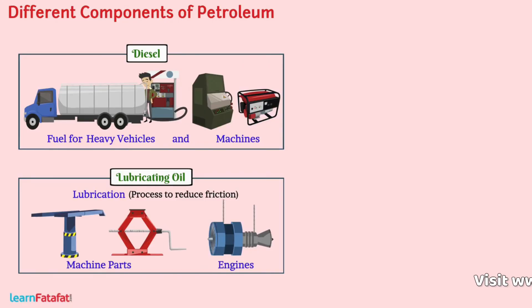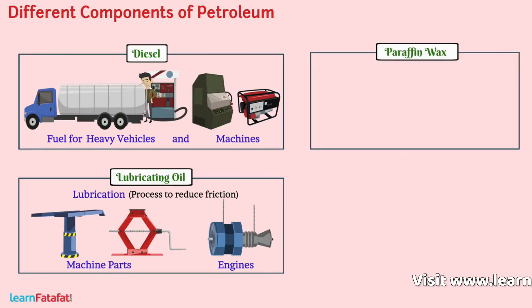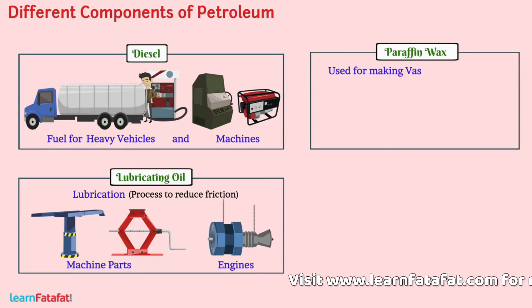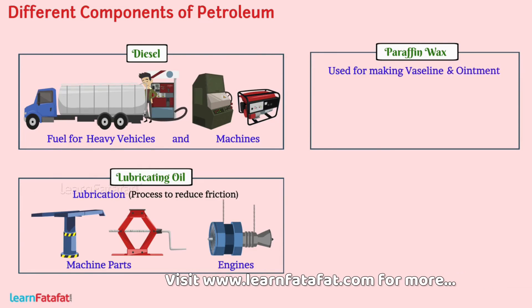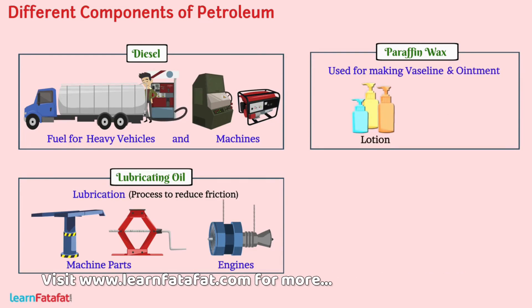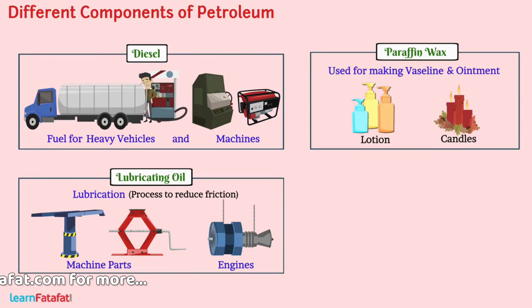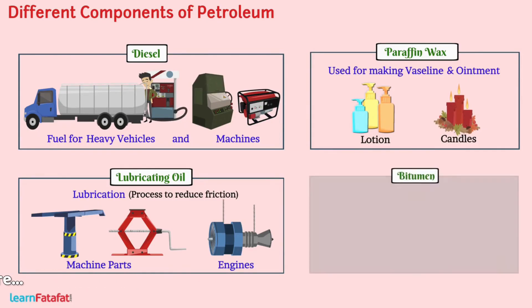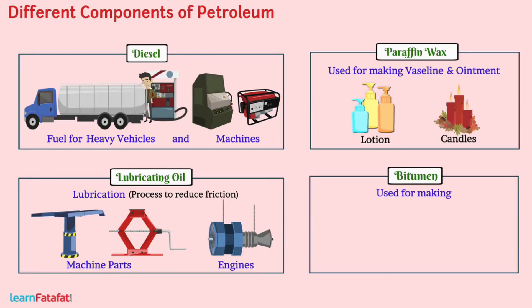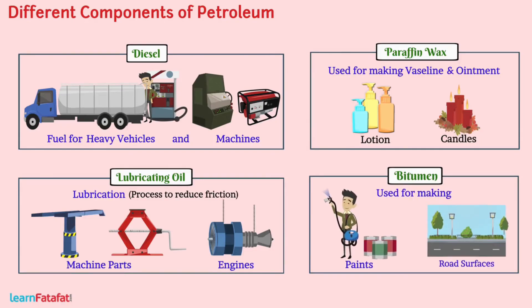Paraffin wax is used for making Vaseline, ointments, candles, etc. Bitumen is used for making paints and road surfaces.